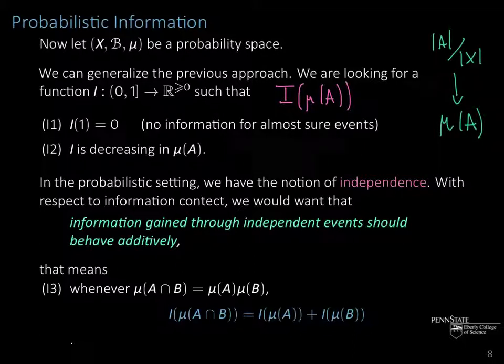As before, we want these two properties: (I1) the information gained for almost sure events is zero—if we have an almost certain event, we don't get any information; and (I2) I is decreasing in the measure—the higher the measure, the lower the information we gain.